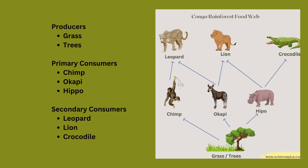These food chains are from the Congo rainforest. In the Congo rainforest food web, grass and trees are the primary producers, sustaining primary consumers such as chimps, okapis, and hippos. These primary consumers, in turn, become prey for the secondary consumers of the ecosystem, which include leopards, lions, and crocodiles.